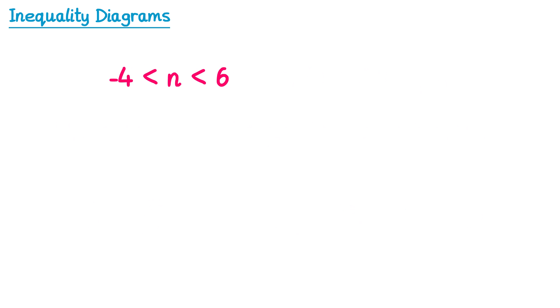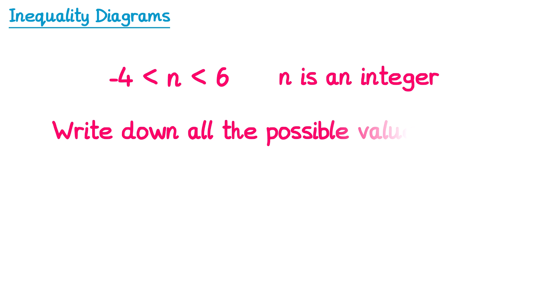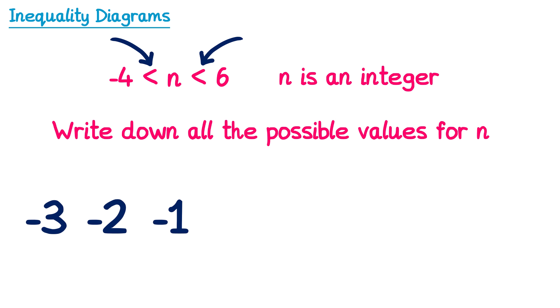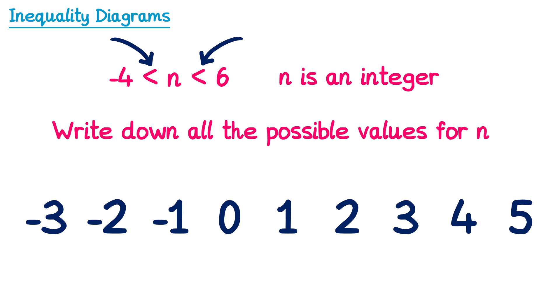Now let's try one more example: n is in between negative 4 and 6, n is an integer. We're not allowed negative 4 or 6 because they both use less than symbols. So we start at negative 3: negative 3, negative 2, negative 1, 0, 1, 2, 3, 4, 5 — and we cannot include the number 6, so we've finished.